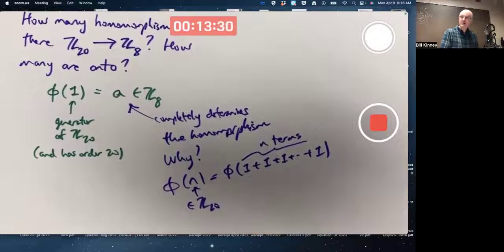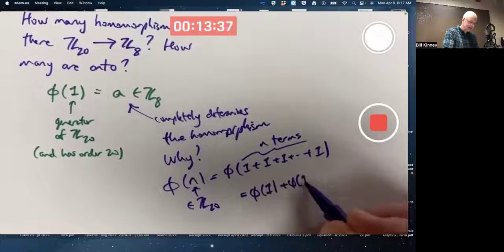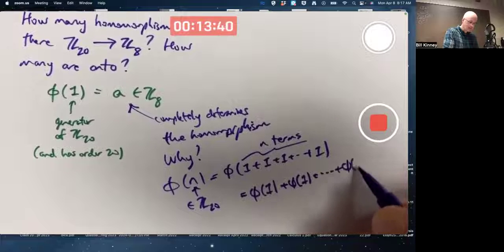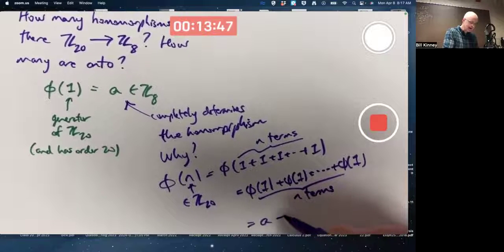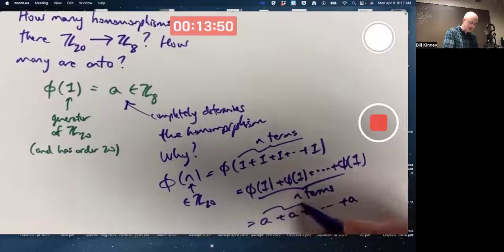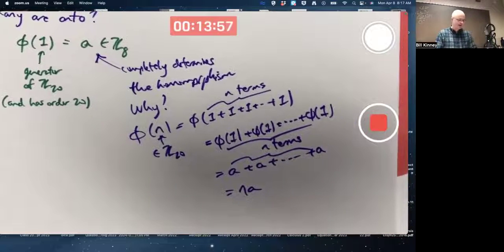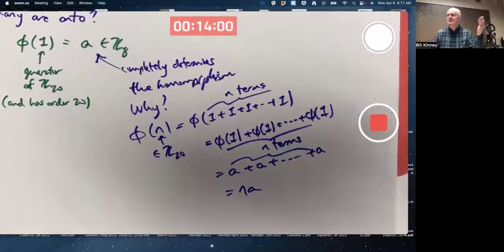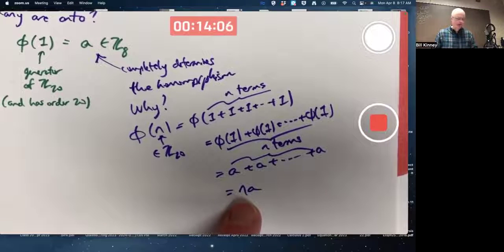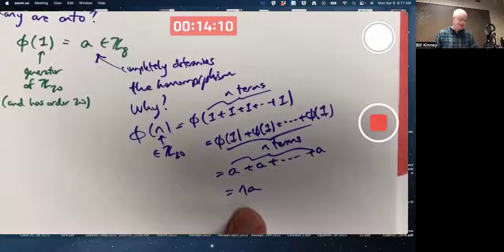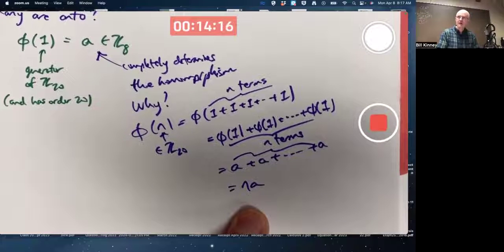And phi is operation preserving. It is a homomorphism. Therefore, I can write that like this. Also with N terms. And since phi of one is A, also with N terms, that's the same as N times A. Now, the group operations addition, this is analogous to A to the nth power in a general arbitrary group. But the group operation is addition here, so we can think of A added to itself with N terms as N times A. In other words, knowing that phi of one equals A does completely determine what the answer is.